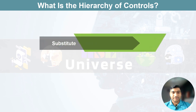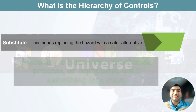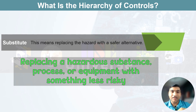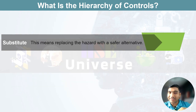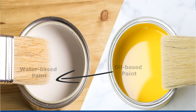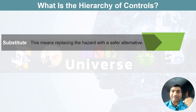Next in line is substitution. This involves replacing a hazardous substance, process or equipment with something less risky — like swapping out a dangerous chemical with a safer alternative. For example, switching to a less hazardous material, or switching to a process that uses less force, speed, temperature or electrical current.